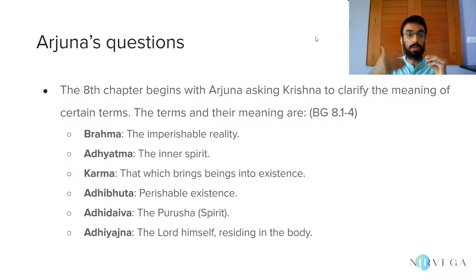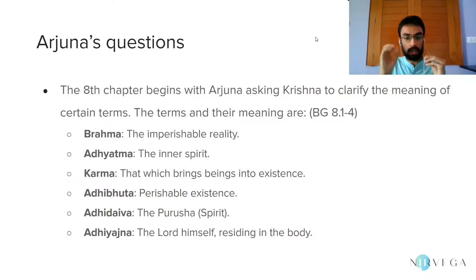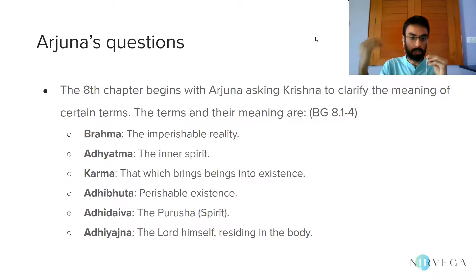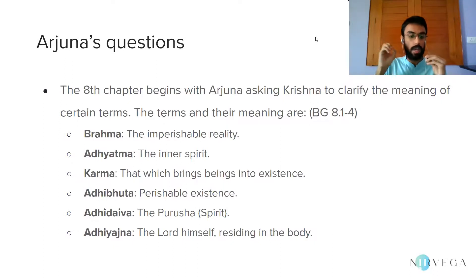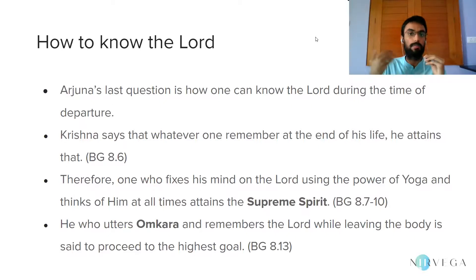The terms and their meanings are as follows. The first term is Brahma — Krishna says Brahma refers to the imperishable reality, the Akshara, which is where the chapter gets its name. Second is Adhyatma, referring to the inner spirit, the soul. Third is Karma — that which brings beings into existence. Fourth is Adhibhuta, the perishable existence referring to the Panchamahabhutas. Fifth is Adhidaiva, referring to the Purusha, the Supreme Spirit. The last is Adhi Yajna, which is the Lord himself residing in the body. Arjuna's final question is how one can know the Lord during the time of departure — Marana Kala.